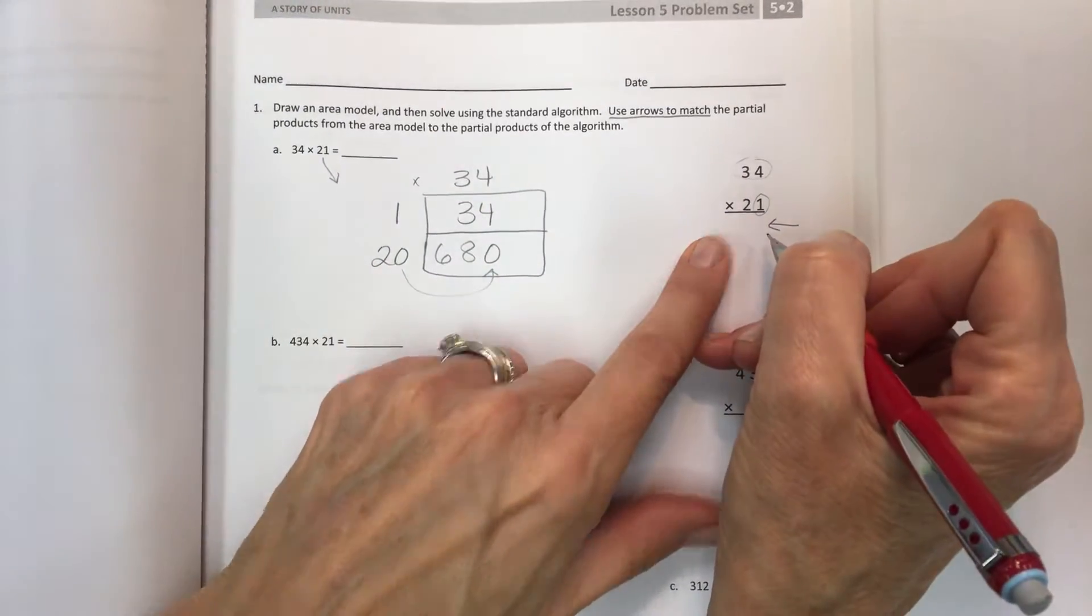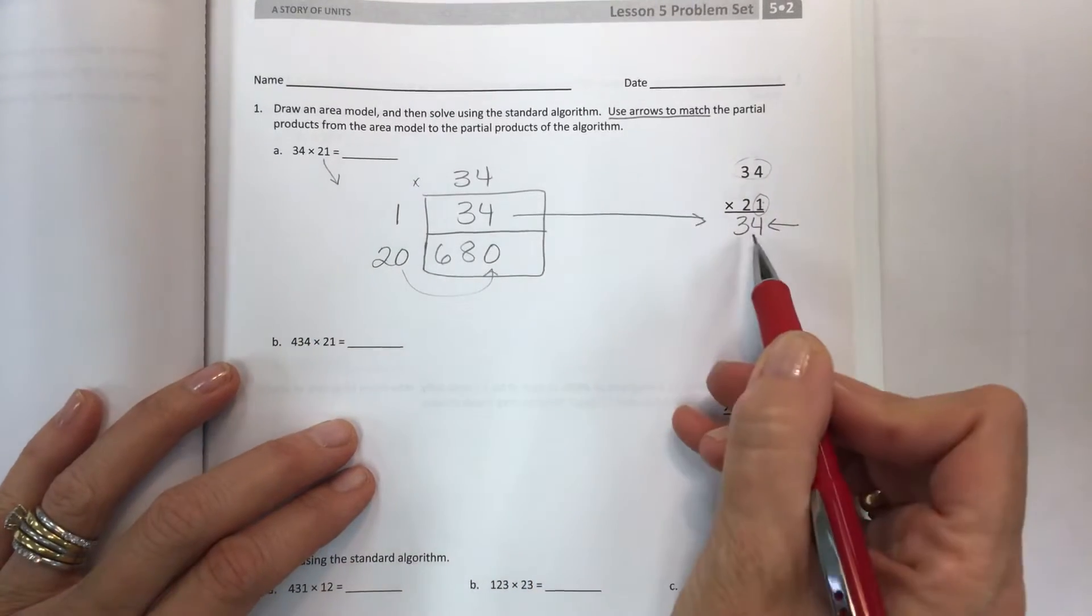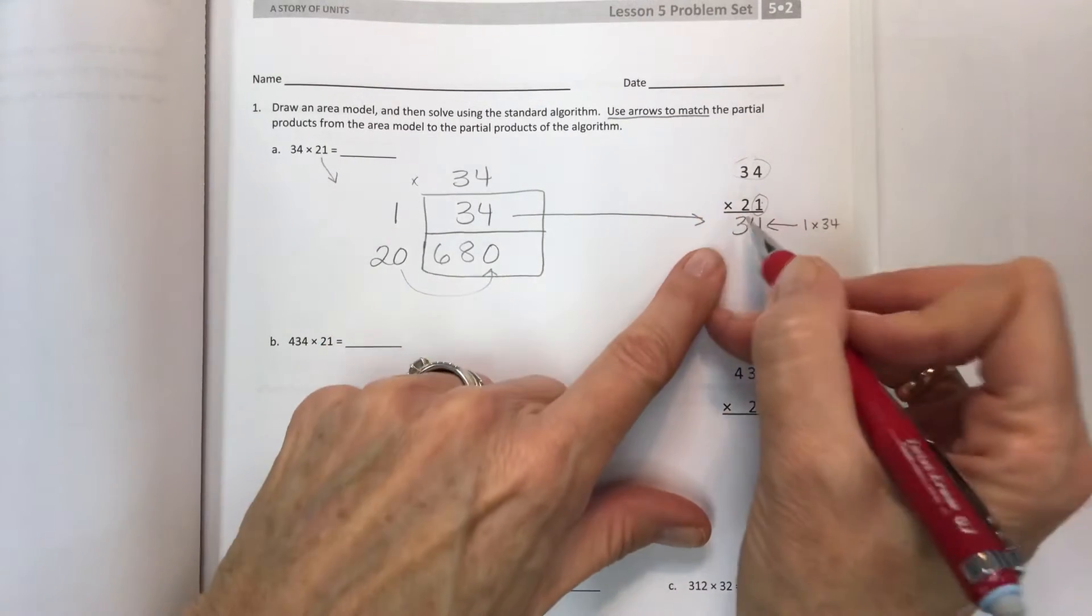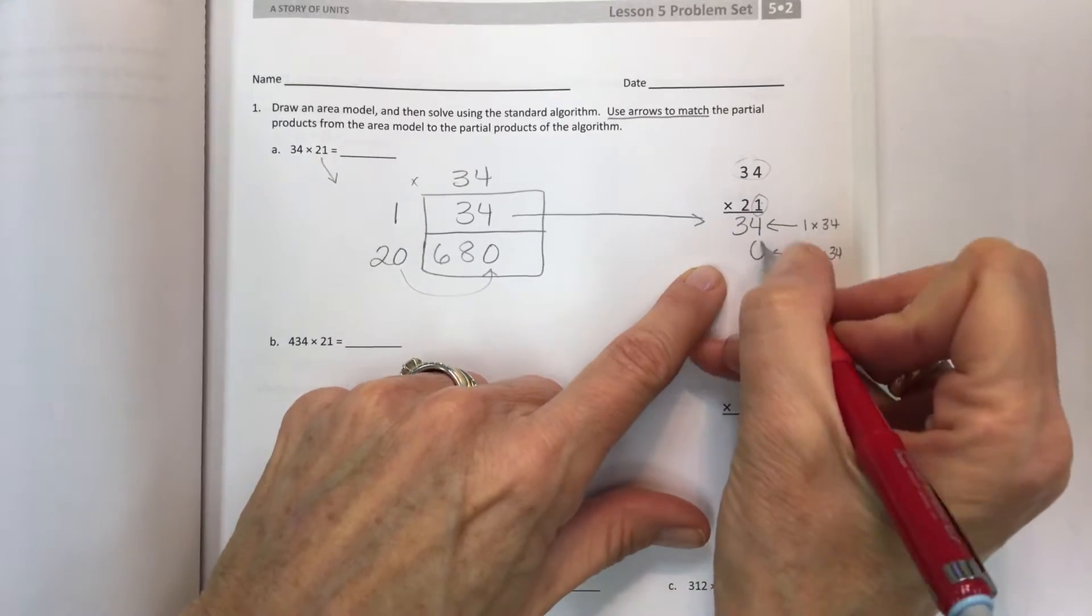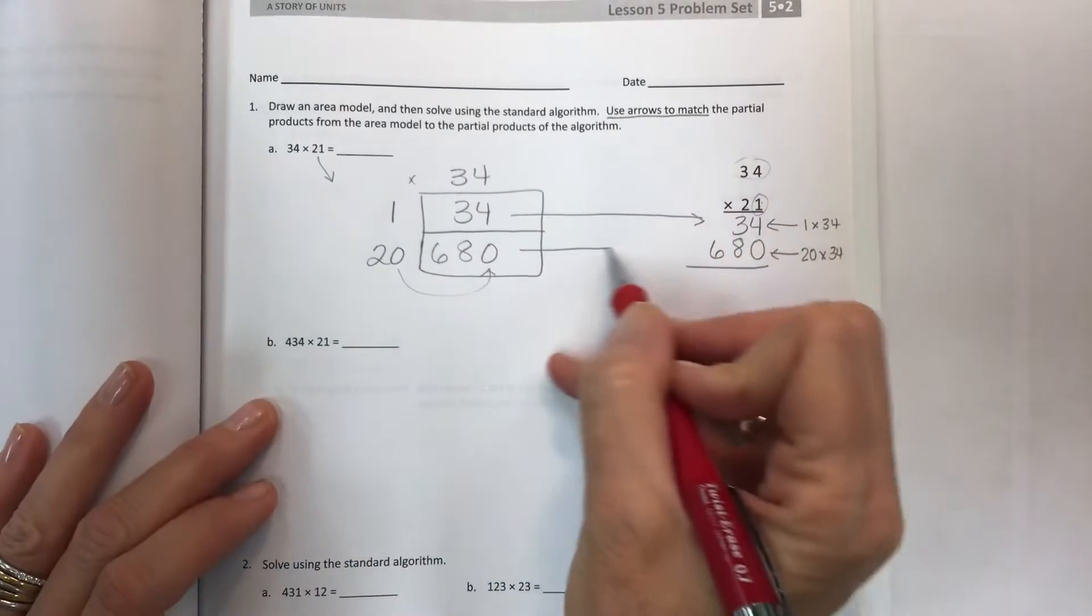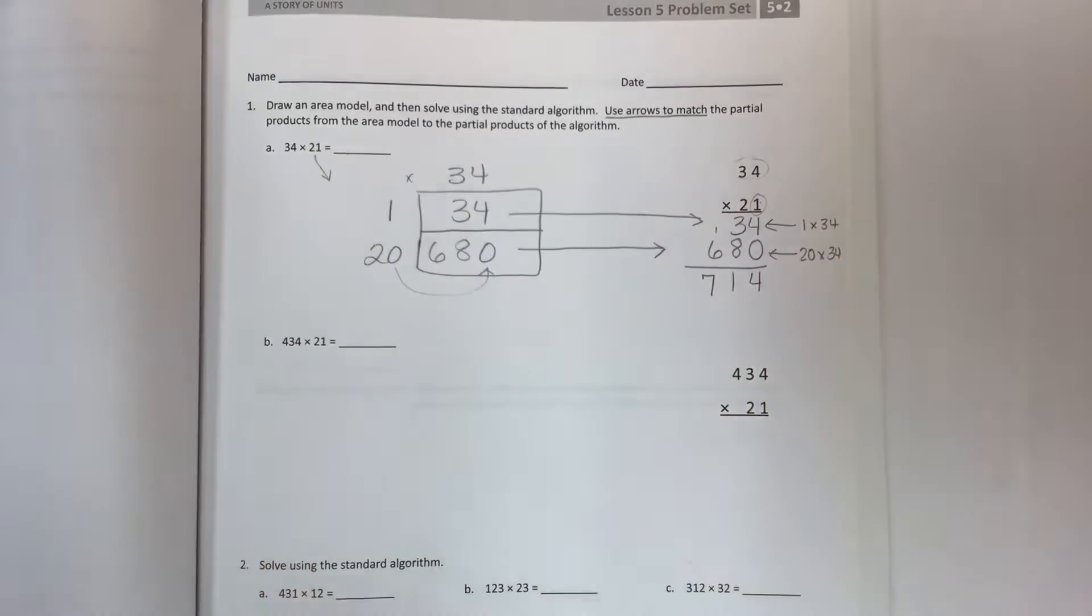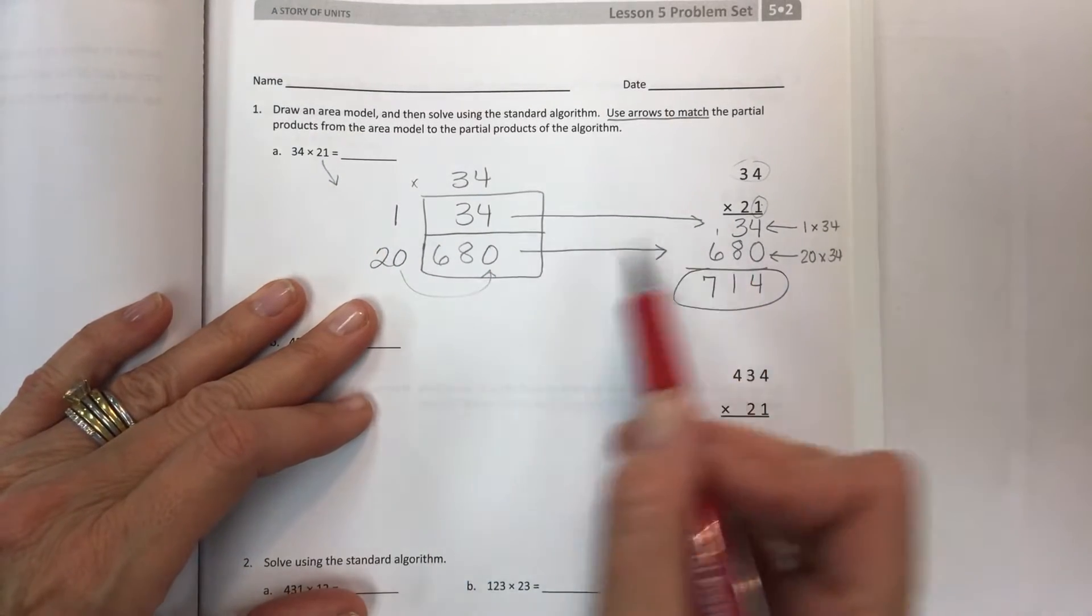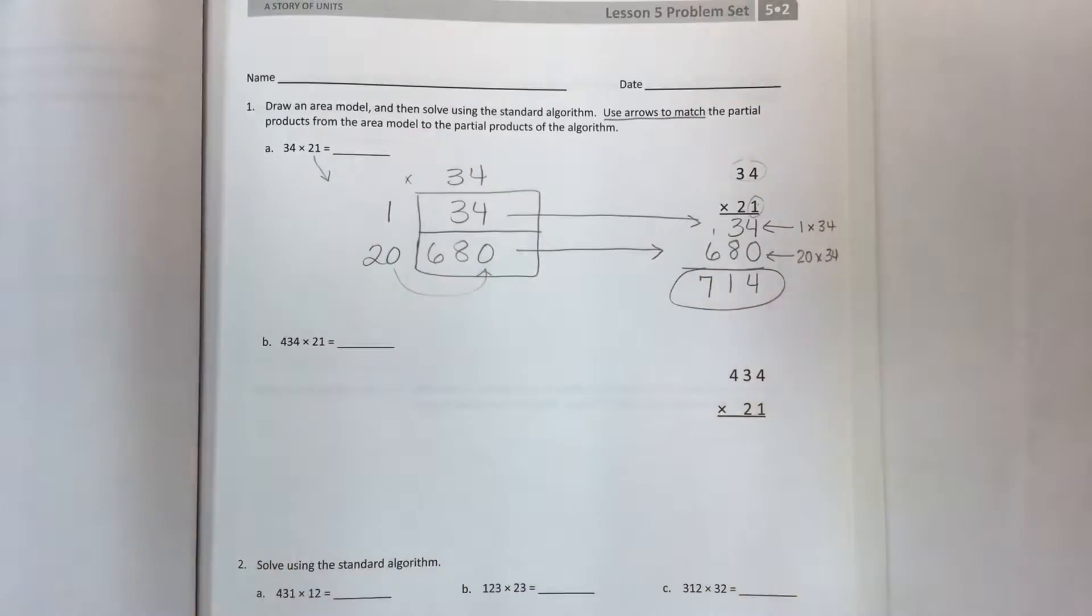Now, go to the standard algorithm. 1 times 4 is 4, 1 times 3 is 3. This is the same. Now this is 2 in the tens place. So this first partial product was 1 times 34, but this second partial product is going to be 20 times 34. So you can start by just putting that 0 there. And then 2 times 4 is 8 and 2 times 3 is 6. We have the same partial product here. Add them up: 4, 8, 9, 10, 11, carry the 1. And you have 714. And that's your answer.